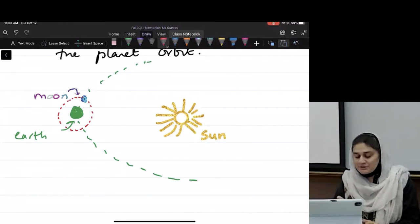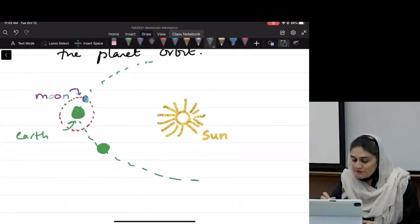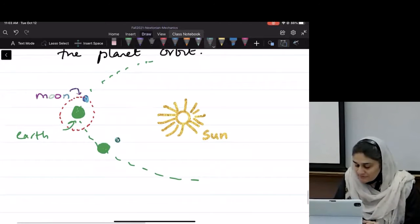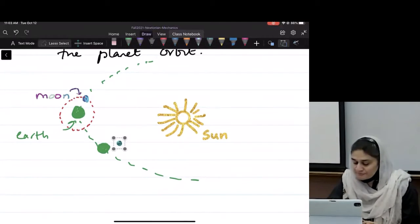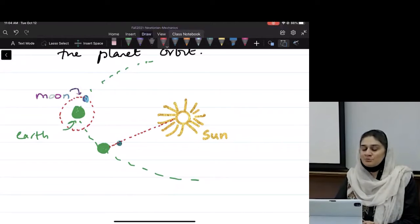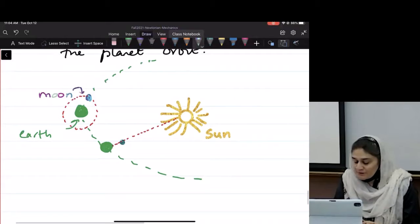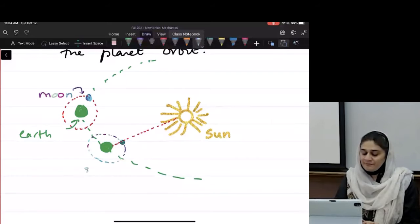So imagine there is a scenario where the earth is here and the moon is here. The new moon. So imagine if this is a new moon. What does that mean? The moon will go around the earth. What angle will it go around? 360 degrees.